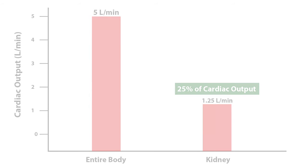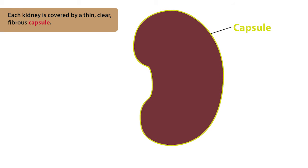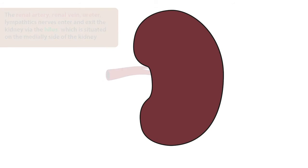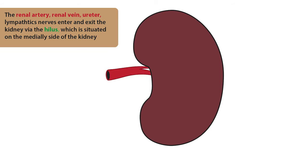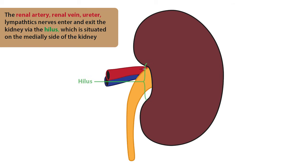Let's start with the outside of the kidney, which is covered by a thin clear fibrous capsule. The renal artery, vein, and ureter enter and exit the kidney via the hilum, which is situated on the medial side of the kidney.